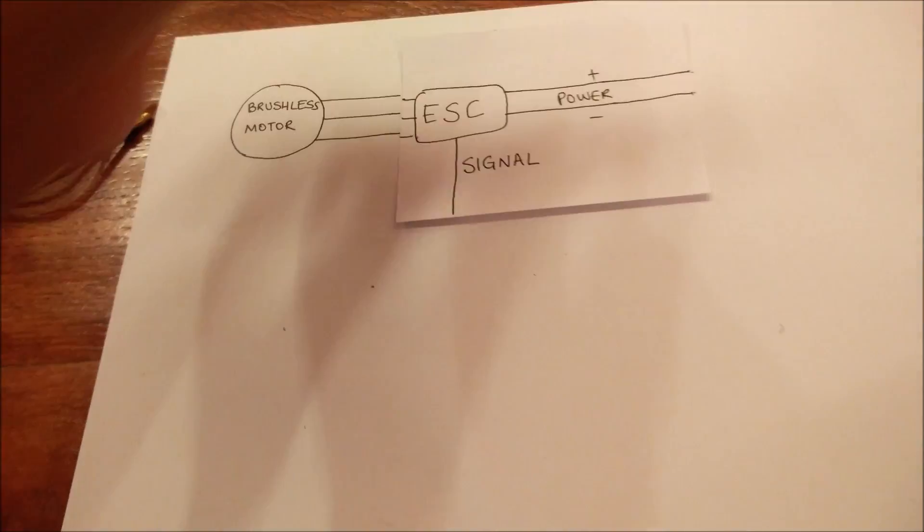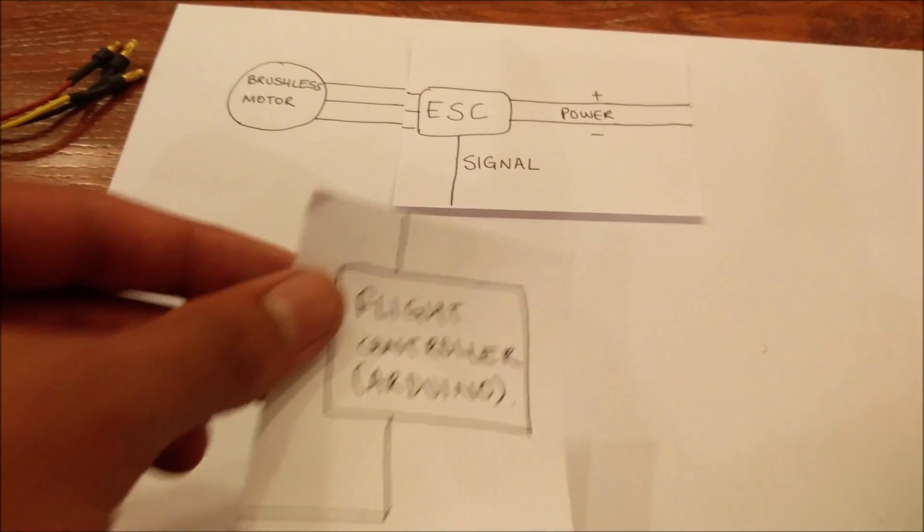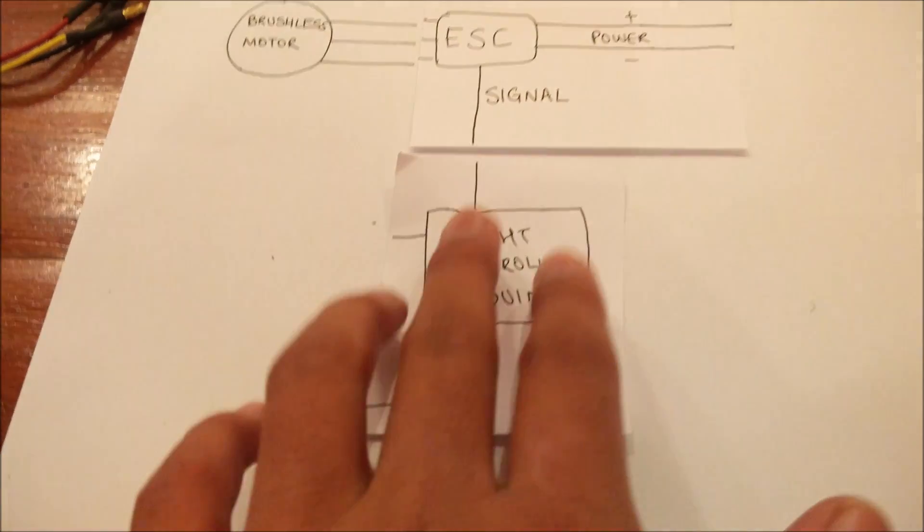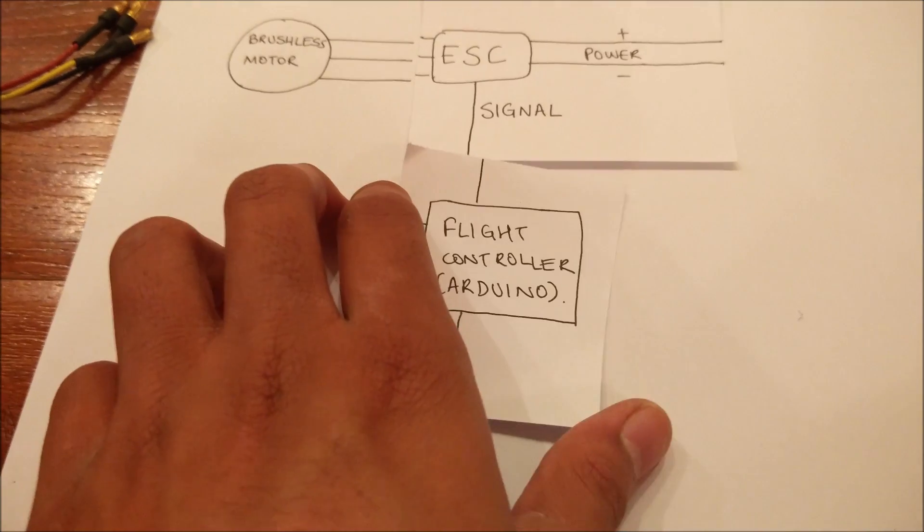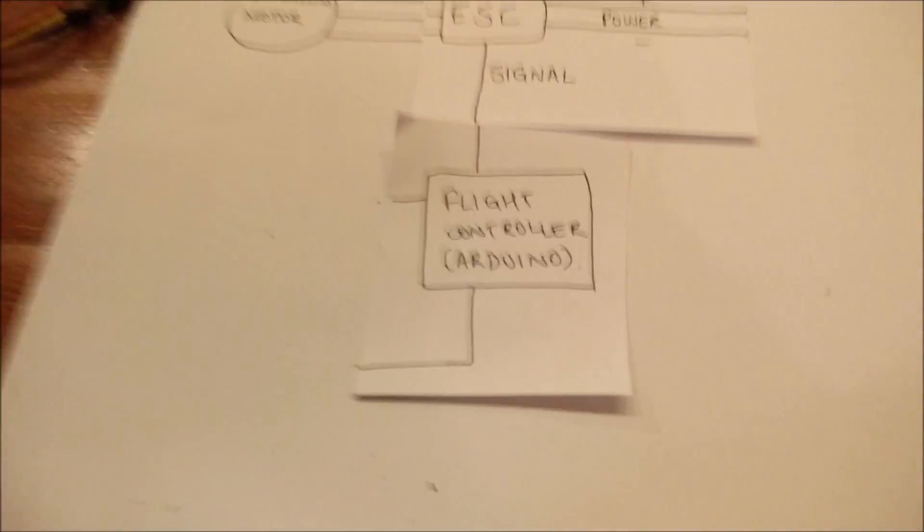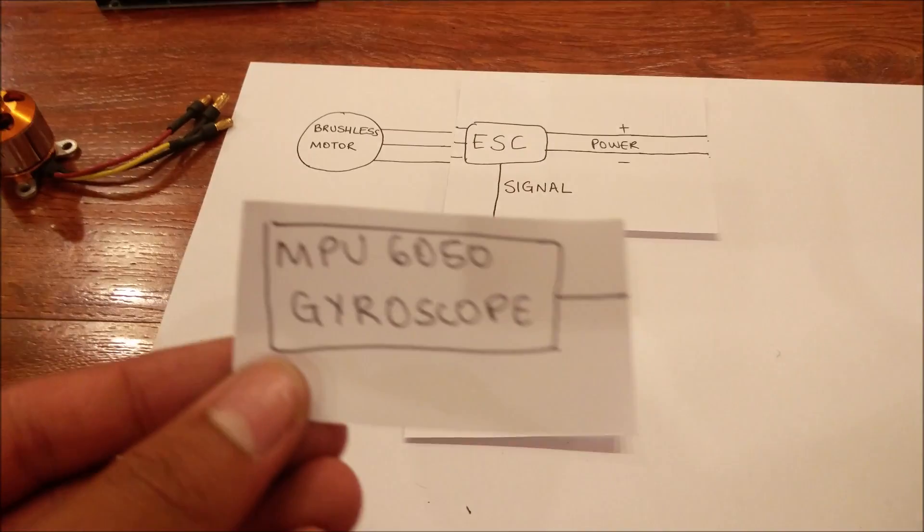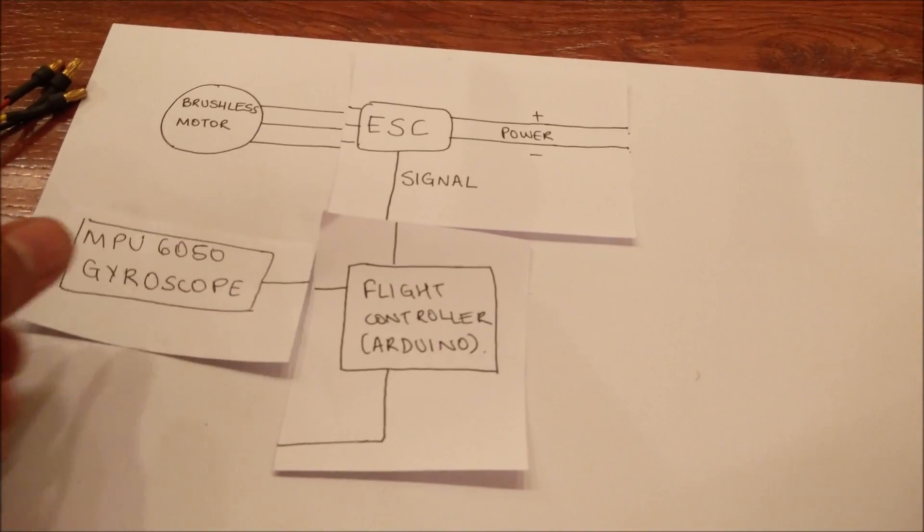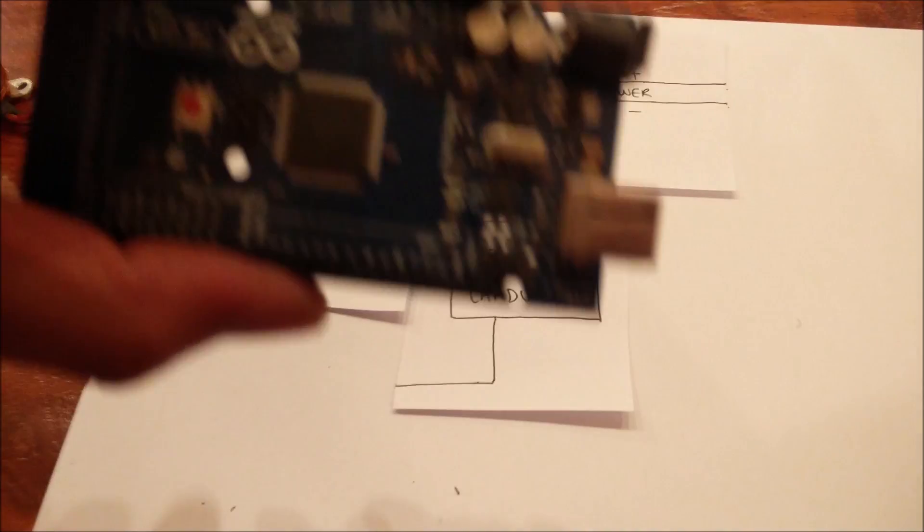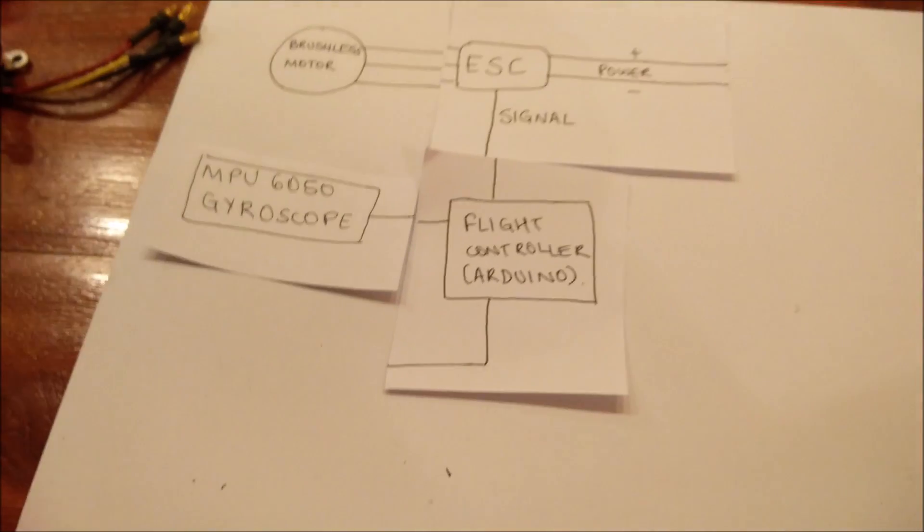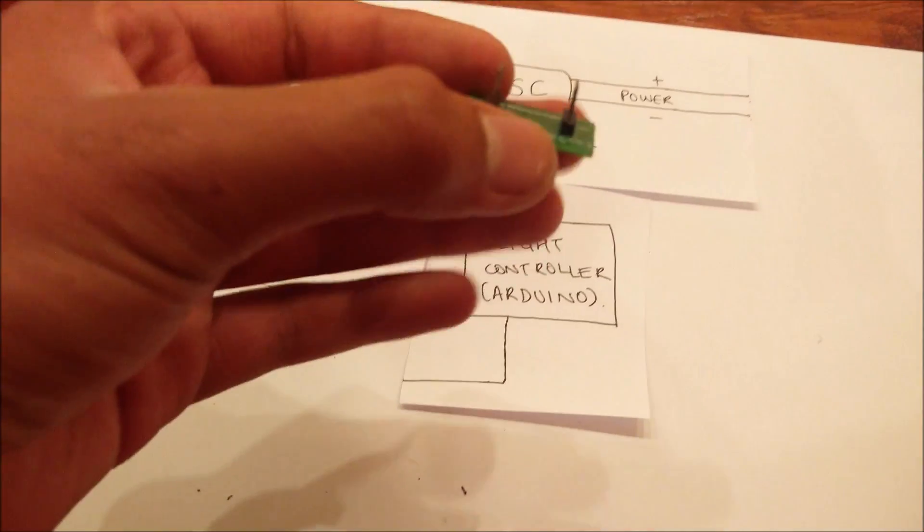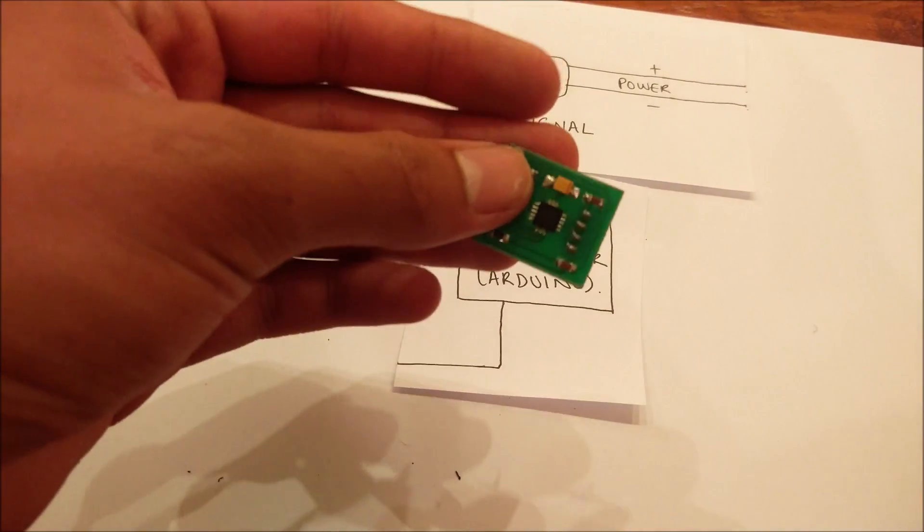Now controlling the speed of all the motors, we have the flight controller. Okay, now giving the flight controller input is the MPU 6050 gyroscope. The flight controller is an Arduino right here and the gyroscope is this. This is not an MPU 6050, it's another type of gyroscope, but I just wanted to show you what they look like.